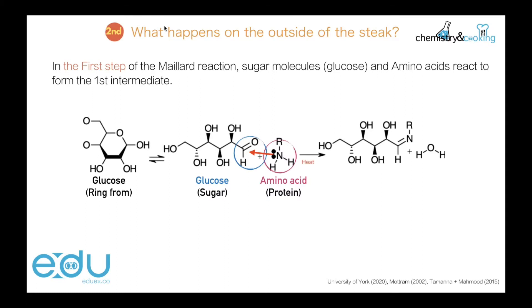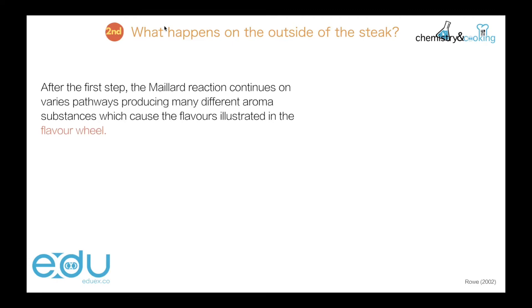Using heat — very important — we then produce in this multi-step process the N-substituent glycosylamine with a carbon double bond nitrogen, and water is also produced. It is very important to note that we need heat for this process. After the first step, the Maillard reaction continues along various pathways, producing a number of different aroma substances.